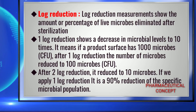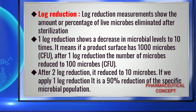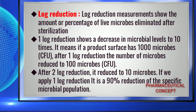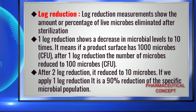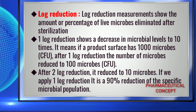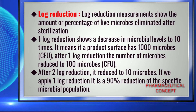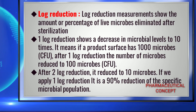Log reduction measurement shows the amount or percentage of live organisms eliminated after sterilization. One log reduction shows a decrease in microbial levels of 10 times. If a product surface has 1000 microbes (CFU — colony forming units), after one log reduction the number reduces to 100 CFU, and after two log reductions it is reduced to 10 microbes. One log reduction equals a 90% reduction of the microbial population.